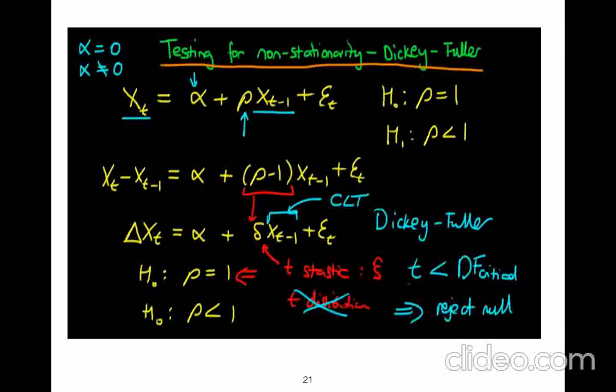So if t-statistics is less than Dickey-Fuller, critical value of Dickey-Fuller, then it is rejected. And so you accept the alternative hypothesis.